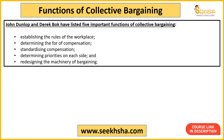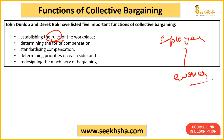Next comes functions of collective bargaining. For functions, we will look at John Dunlop and Derek Bogg's functions, as these are the most important ones — others have more or less said the same. The first function is that rules get established in the workplace. In collective bargaining, the employer sat the worker down together to make the rules. When the worker was present and rules were made with his input, he won't break those rules.